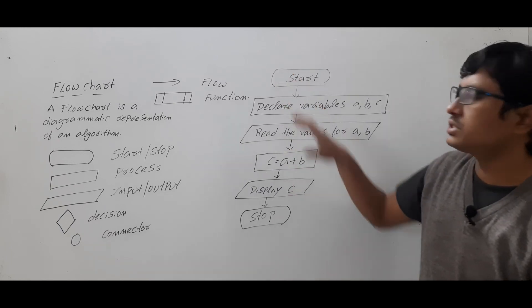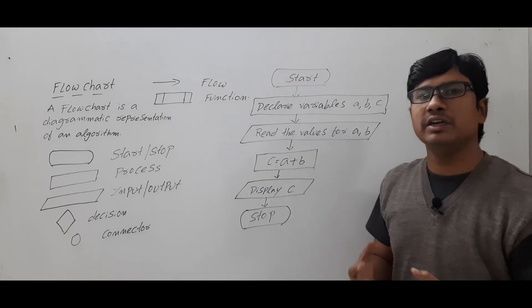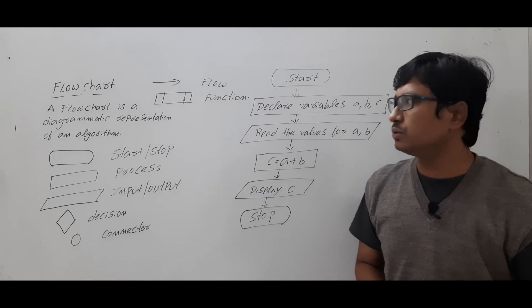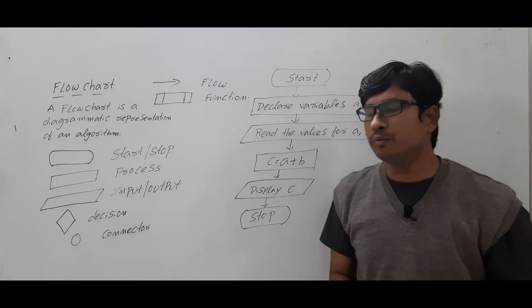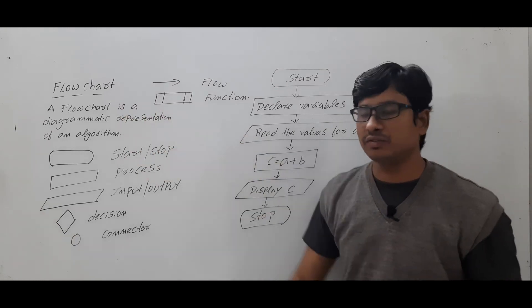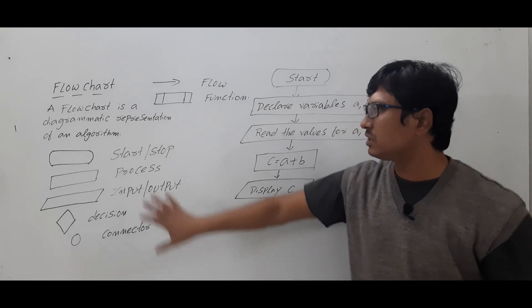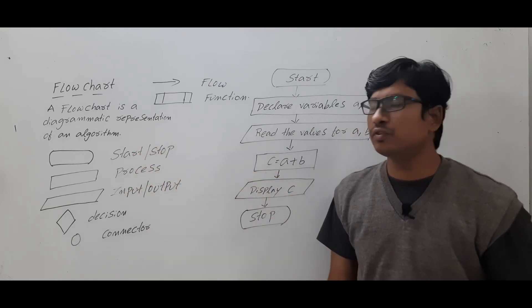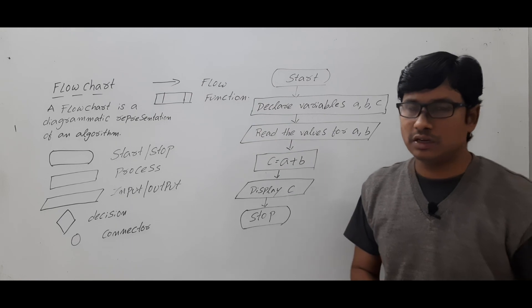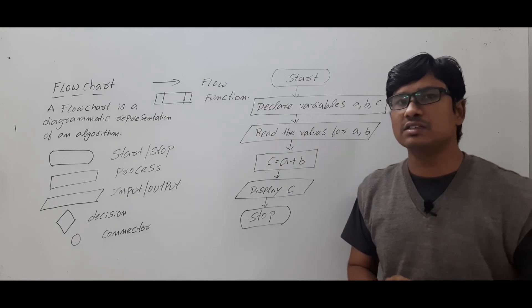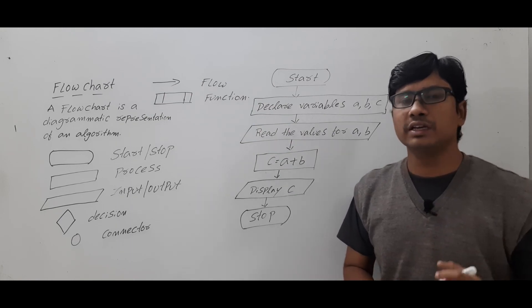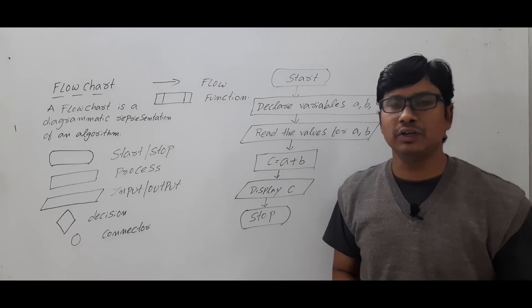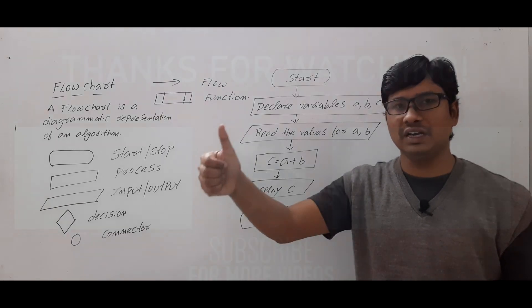Finally, you need to stop. Every flowchart should have a start and should have a stop. So this is the complete flowchart for performing the addition of two numbers and displaying the result to the user. With this video I hope you have understood the definition of a flowchart, the symbols used, and how to draw one. I will discuss two more examples in the coming videos. Thank you for watching — have a nice day.